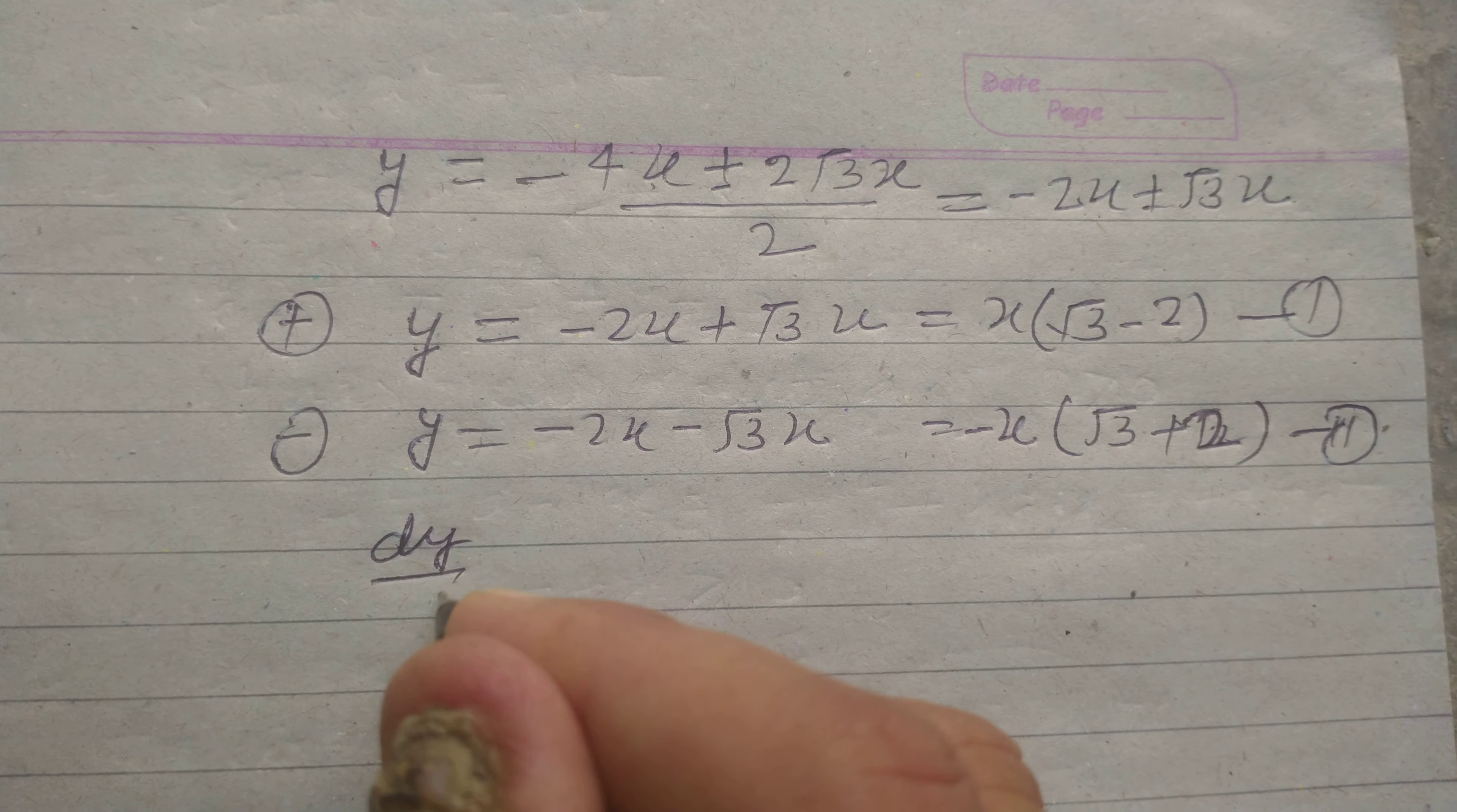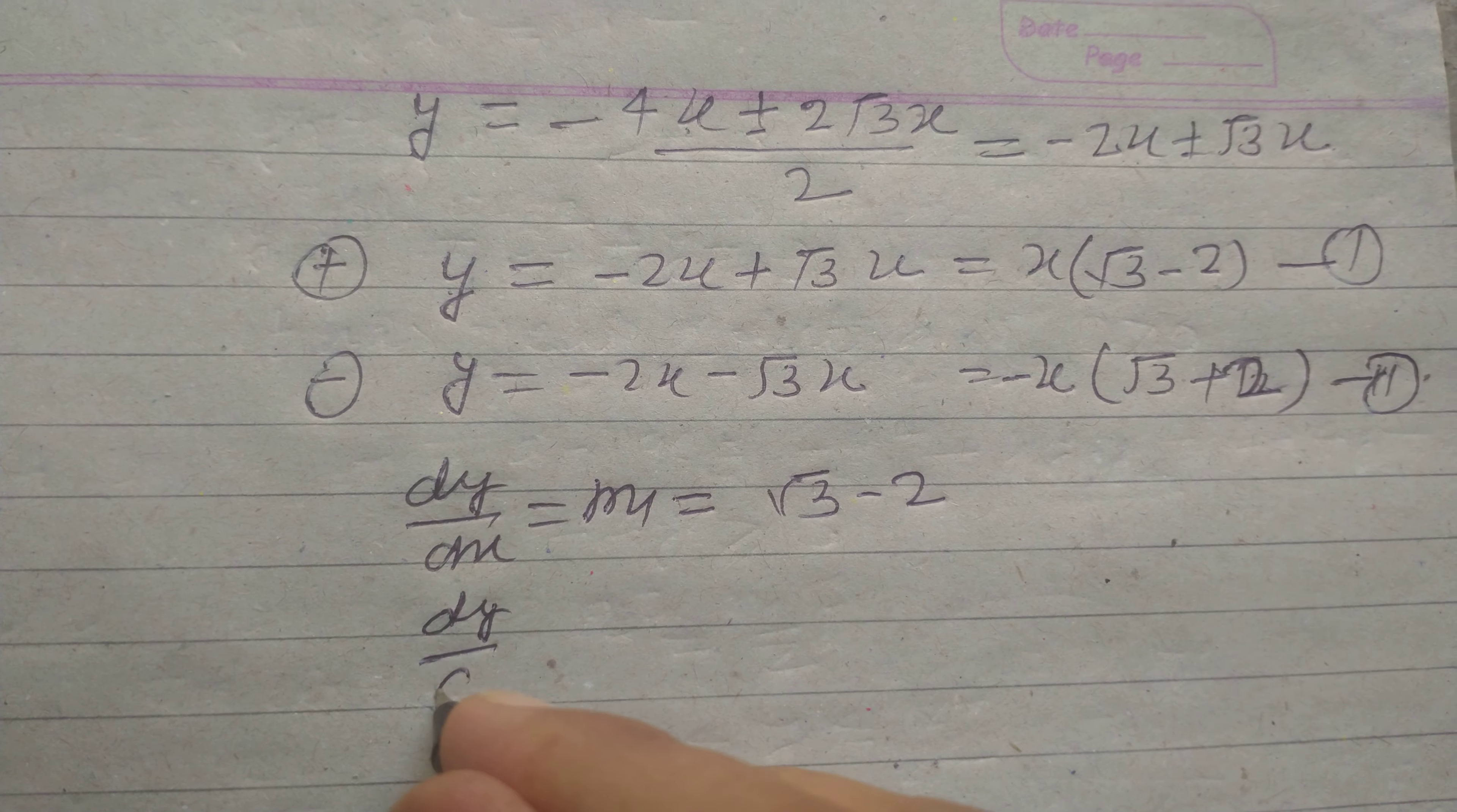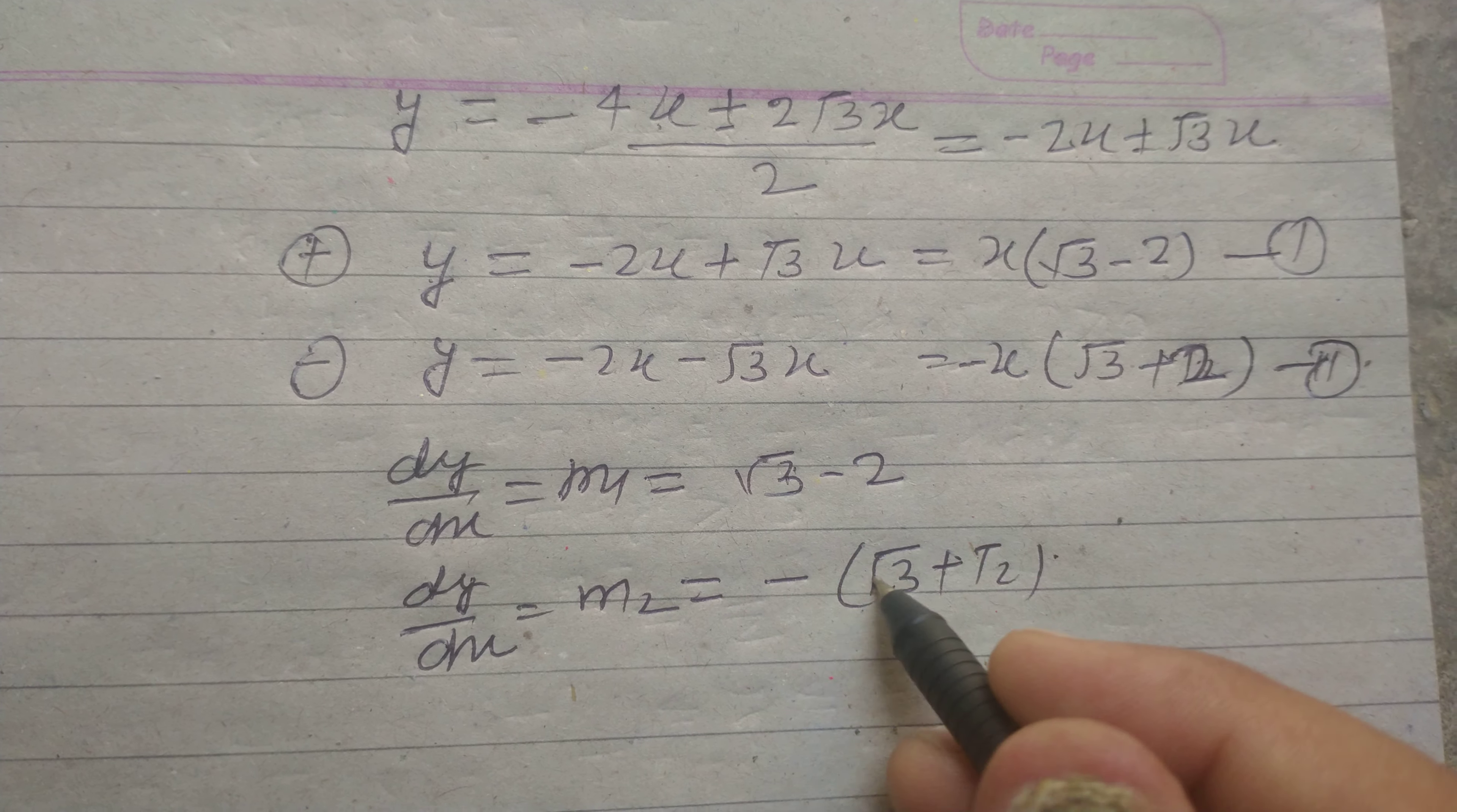So dy/dx is gradient, which is m₁. When solving this, we got √3 - 2. And dy/dx, or gradient of second line, which is m₂ = -(√3 + 2). So this is the gradient of the lines.